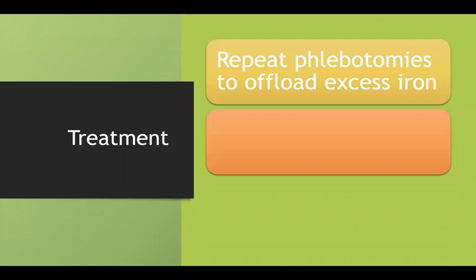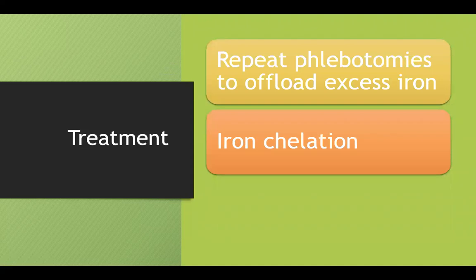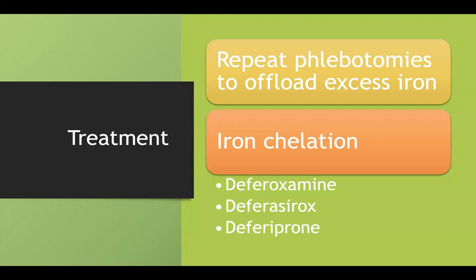How do we treat hemochromatosis? One way, because there's so much iron within our bloodstream, we can use phlebotomy. We can take out some of that blood to ameliorate some of that excess iron. You can also chelate iron. There are several medications used to chelate iron, basically to bind to that iron so it doesn't deposit in tissues and cause the problems we discussed earlier. You can use deferoxamine, deferasirox, and deferiprone. These are common chelators. On a test, just think about this defer prefix as iron chelators.